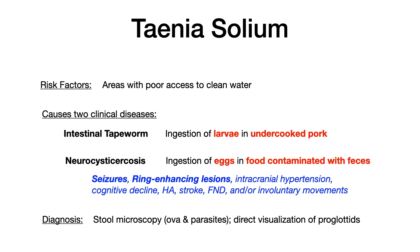Neurocysticercosis, on the other hand, is due to the ingestion of eggs in food contaminated with feces. So the key difference is: the intestinal form comes from larvae in pork, and the CNS form comes from eggs in fecally contaminated food. That's really high yield. They'll give you either pork in the question stem or contaminated food, and you'll have to differentiate the disease type or expected symptoms based on the etiology.